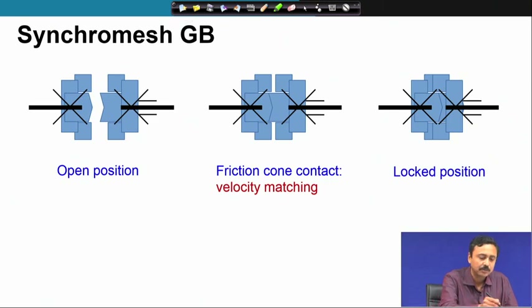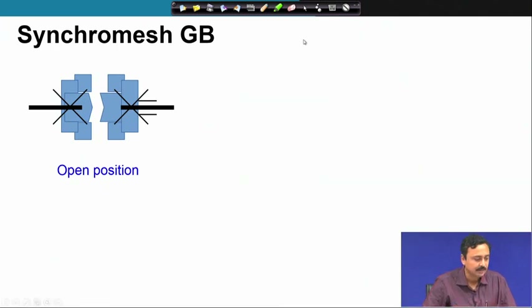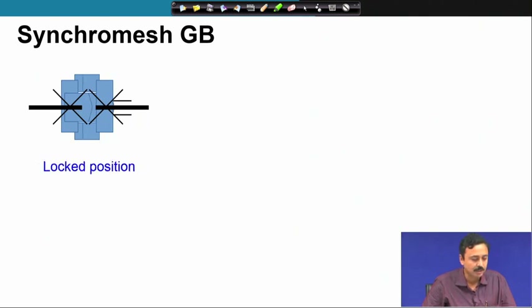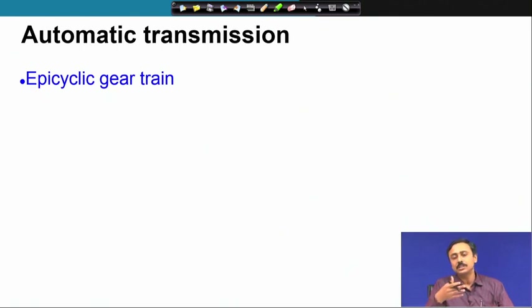This is applied to the gearbox. The sequence is: open position, then friction cone contact for velocity matching, and finally locking. The friction cone or friction clutch is used to match velocity, and then it is locked. Synchromesh gear boxes have a very smooth operation — that is the advantage.